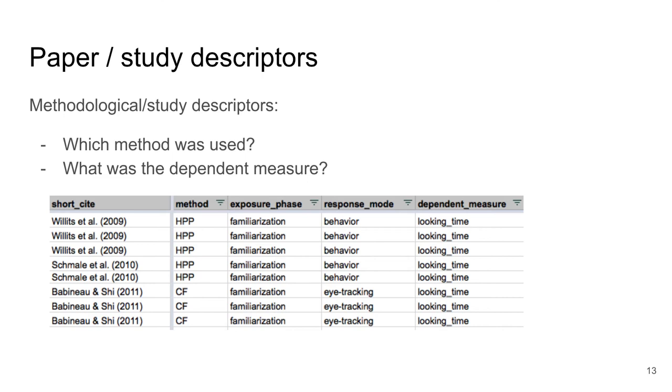Here are two examples from three papers. Two use the head turn preference procedure which we abbreviate as HPP. One uses central fixation or CF. The response mode is determined by the method, namely either a head turn and thus behavior or eye movements. But in both cases we want to measure looking times and this is what is contained in the dependent variable and entered into the statistical analysis of the paper. Since there are many possible dependent variables and methods we have created an extensive open-ended list of possibilities in MetaLab.